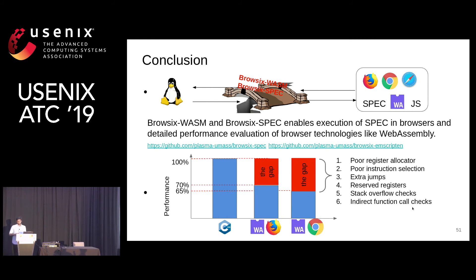The goal of WebAssembly is to take a C++ program, compile it down so that it can be executed in the browser. And the kind of applications that WebAssembly is being used for is these kinds of applications.